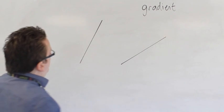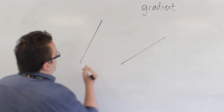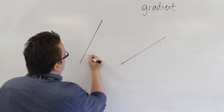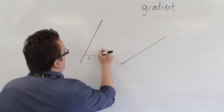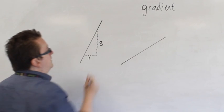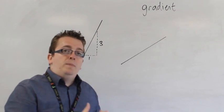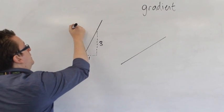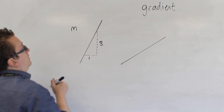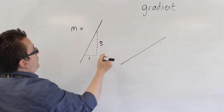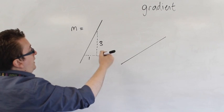So what we can say is that if for every one that I go along, I go up, let's say, three, then what I would be saying is that this line has gradient three. So M is the letter that we're going to use for gradient, so I can say M is equal to three in this case.